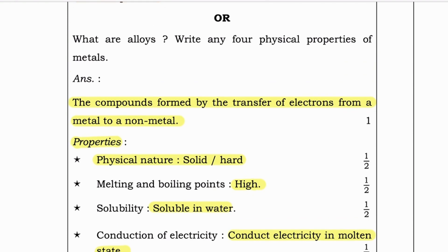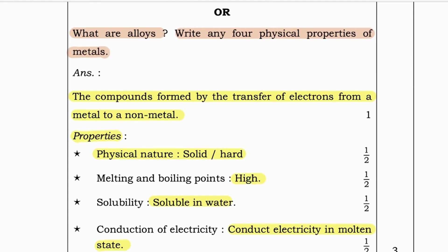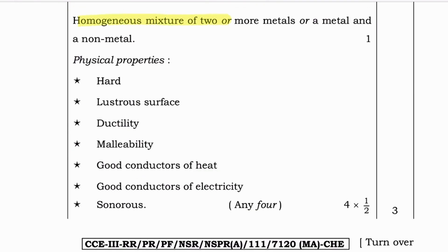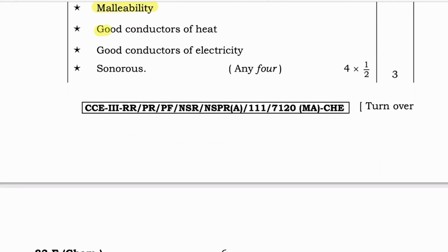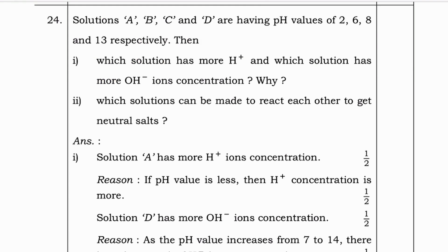Optional question: What are alloys? Write any four physical properties of metals. Alloys are homogeneous mixtures of two or more metals, or a metal and a non-metal. Physical properties of metals: they have a hard lustrous surface, show ductility and malleability, are good conductors of heat and electricity, and are sonorous.